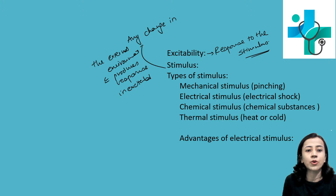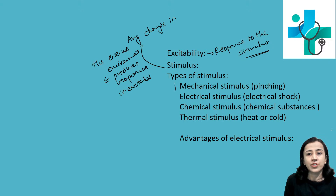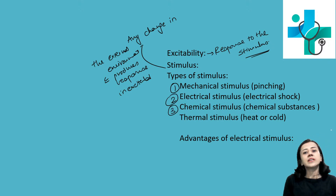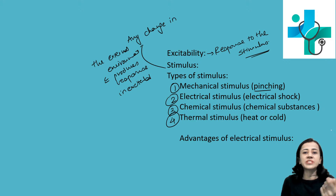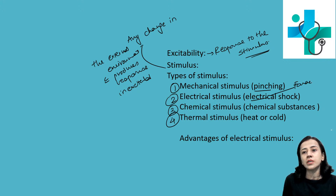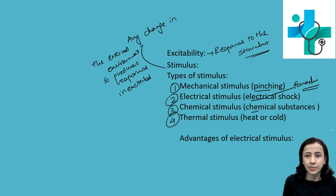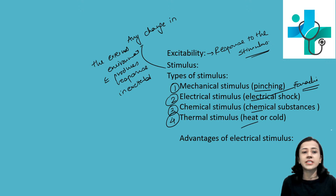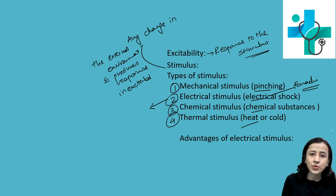Stimulus is of various types depending on its characteristics. They are either mechanical stimulus — like pinching — electrical stimulus, chemical stimulus, and thermal stimulus. Normally, pharadic current is used to record the response of tissue. For experimental purposes, we use electrical stimulus.